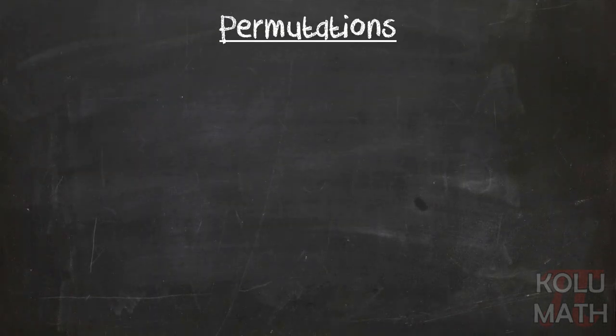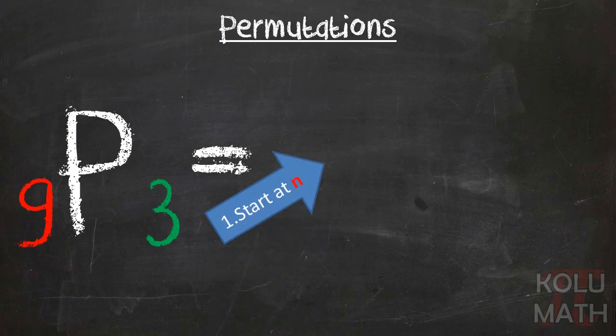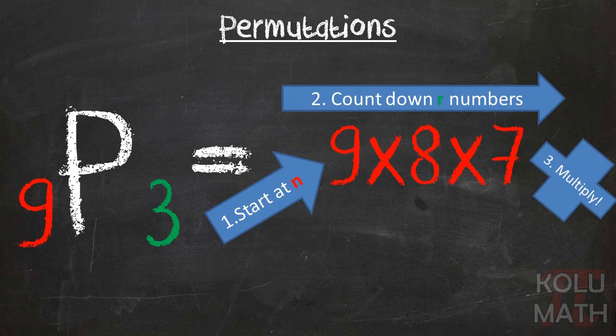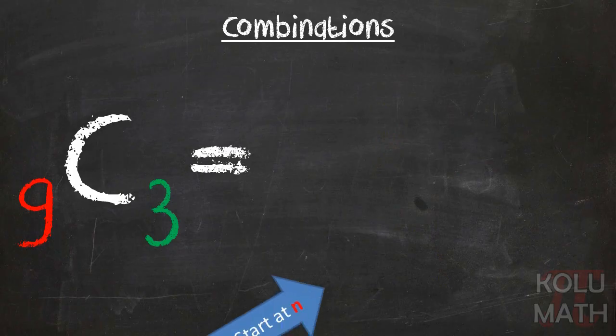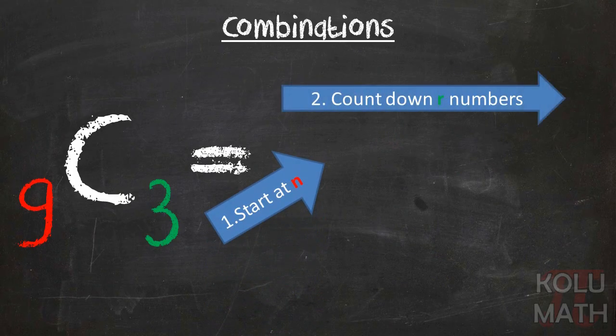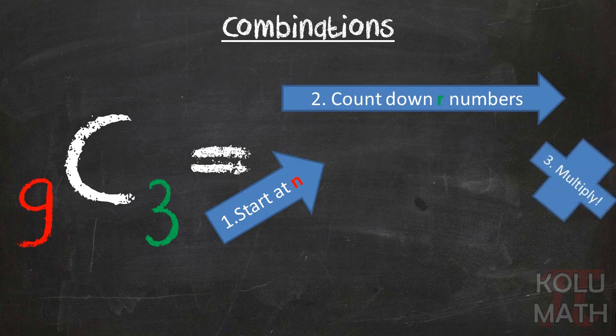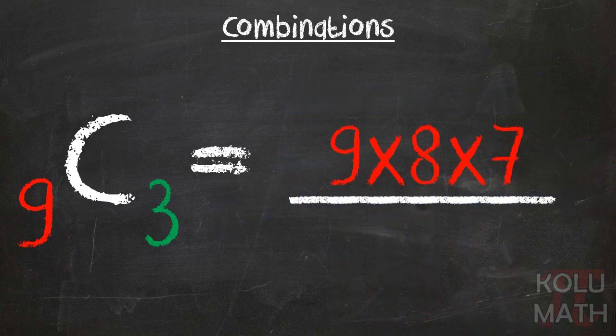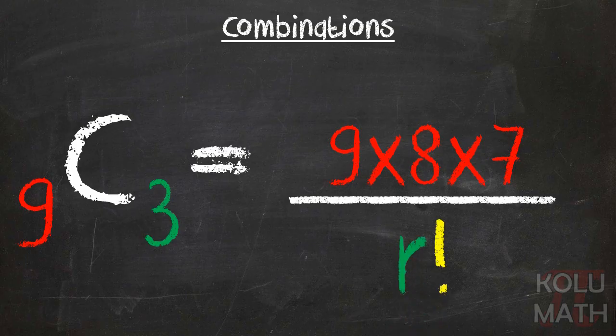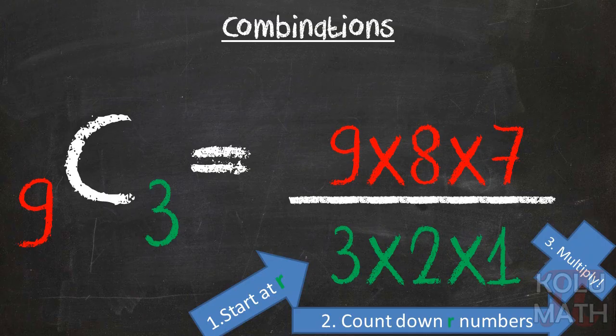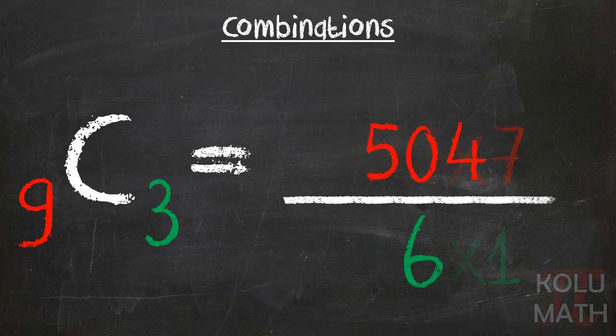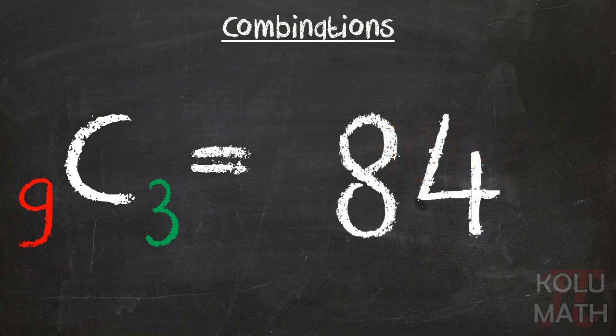And if you remember our shortcut for solving permutations, starting at n, counting down our numbers, and then multiplying them together, we can actually use that exact same rule when we're solving combinations using this equation. I can go ahead and start at n, so in this case 9, count down our numbers, so 3, and then multiply them together. I can do the same for the denominator, except for the denominator, I'm just doing a straight factorial. So I'm going to start with r, I'm going to count down our numbers, and then I'm going to multiply. Go ahead and finish up the math there, reduce that fraction, and that gives us an answer of 84 different combinations if we're doing a 9c3.